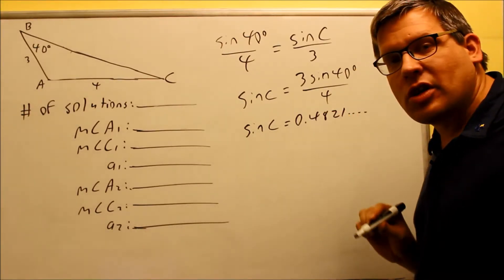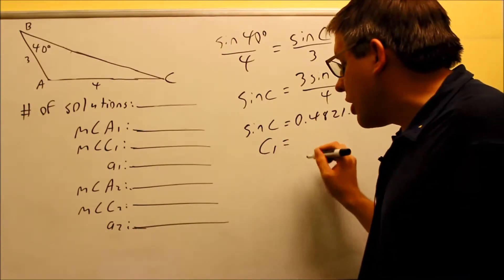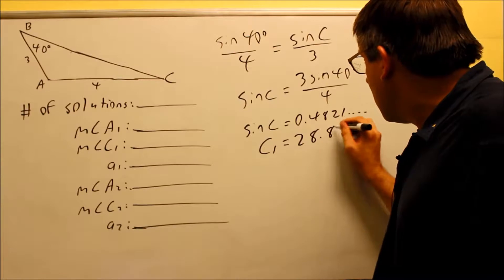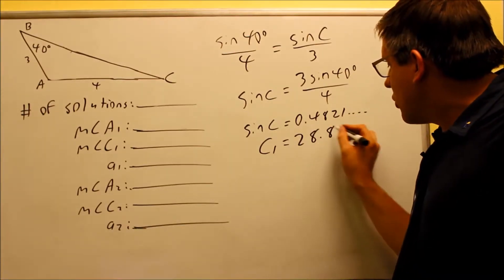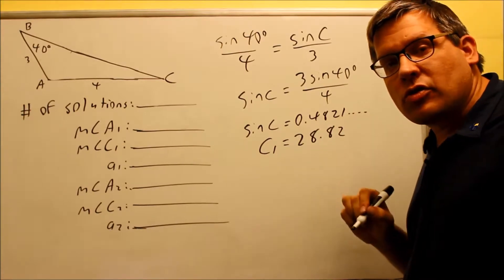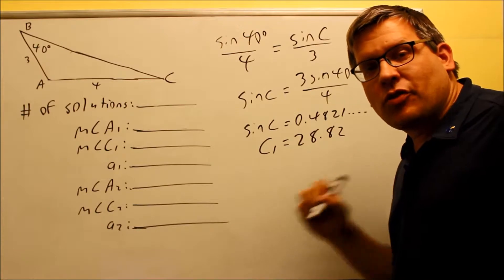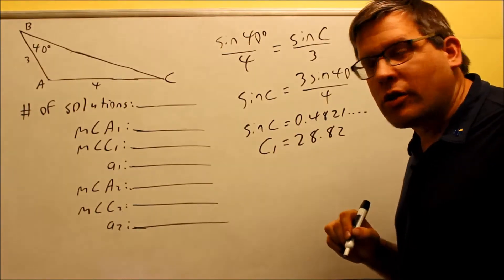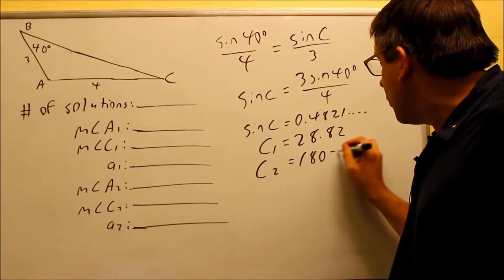But this one tells me at least I'm going to have one solution. I don't know from this whether I have one or two solutions, but I know I at least have one solution. When you do the inverse in your calculator, your calculator is always going to give you one solution only. So that's the first one, 28.82. It always will give you a solution in the first quadrant. But we know from a previous video that your sine is positive in both the first and the second quadrant, which means we always have to find out the secondary solution automatically whenever you do these problems.